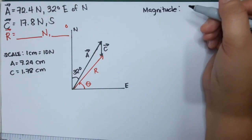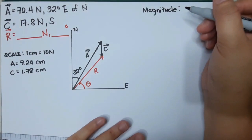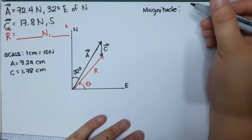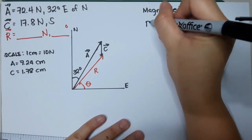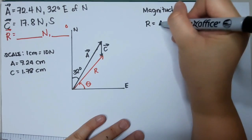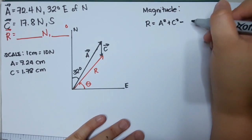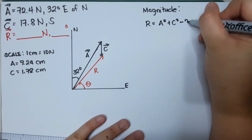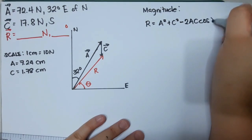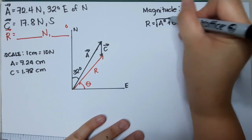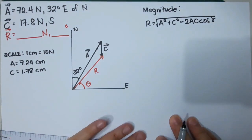We can find the magnitude of the resultant vector using the cosine law. Since we are looking for R and using vector C, the formula is: R equals the square root of A squared plus C squared minus 2AC cosine gamma.